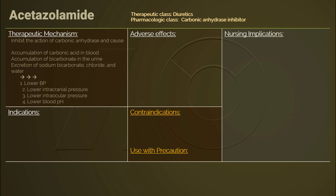Acetazolamide inhibits the action of carbonic anhydrase, leading to excretion of sodium, bicarbonate, and chloride. Subsequently, carbonic acid accumulates in the blood and the blood pH level decreases. Bicarbonate accumulates in the urine and so increases urine pH. The therapeutic effects follow as blood pressure drops, intracranial pressure drops, intraocular pressure drops, and blood pH drops.